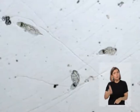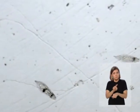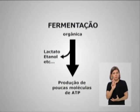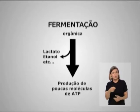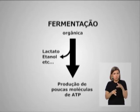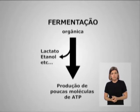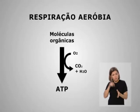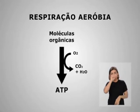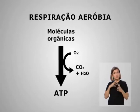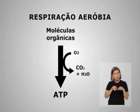Não importa por qual caminho os seres vivos obtenham seu alimento: ele deve ser oxidado para liberar energia, que será usada em todas as reações químicas essenciais à manutenção da vida. Entre os micro-organismos, existem os que realizam a fermentação, como alguns fungos. A fermentação envolve a quebra de moléculas orgânicas para a produção de poucas moléculas de ATP, que funcionam como armazenadoras de energia. No entanto, a maioria dos seres vivos microscópicos, assim como nós, realizam a respiração aeróbia. Neste processo, que necessita de oxigênio, as moléculas orgânicas são totalmente oxidadas e são produzidas muitas moléculas de ATP.